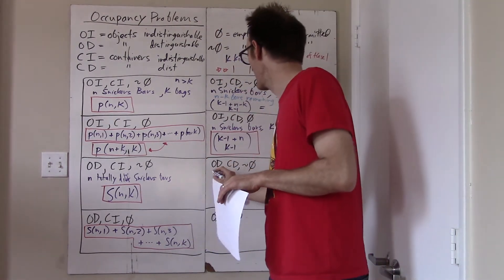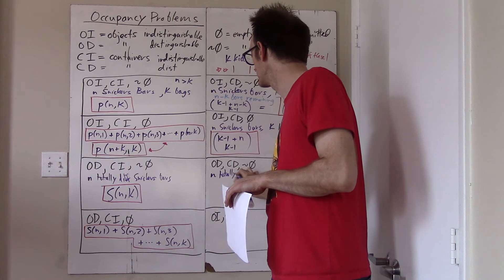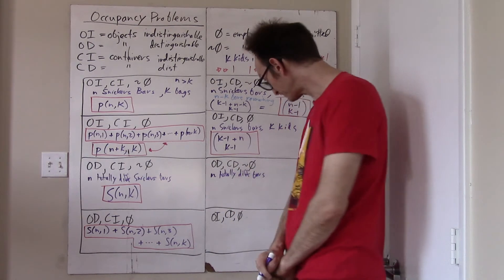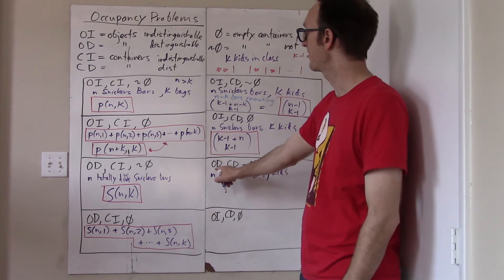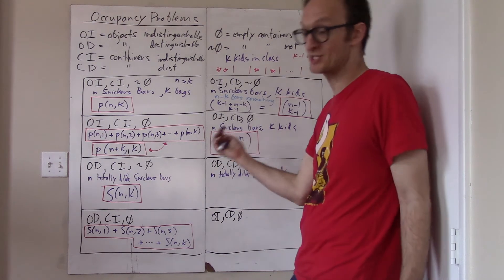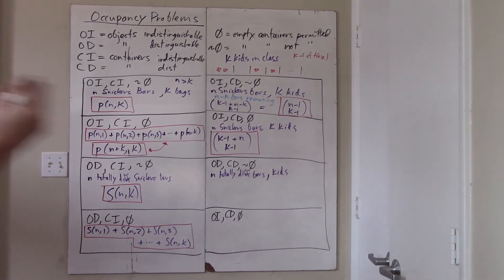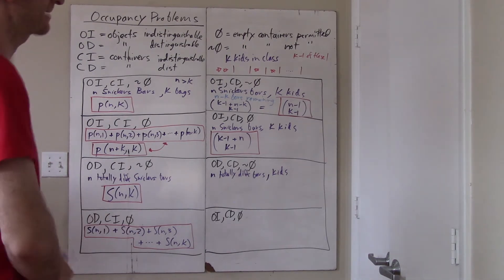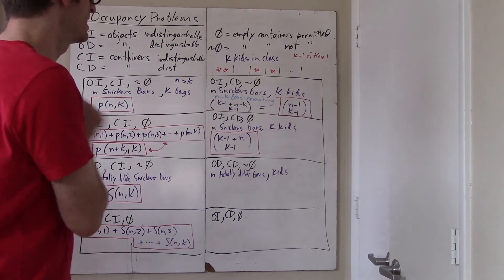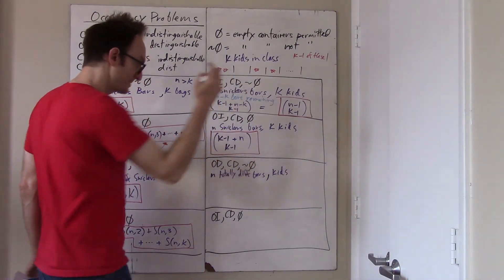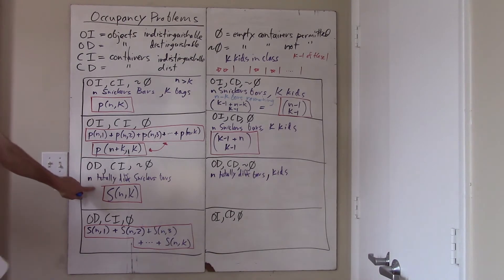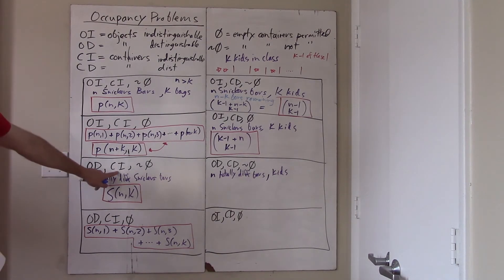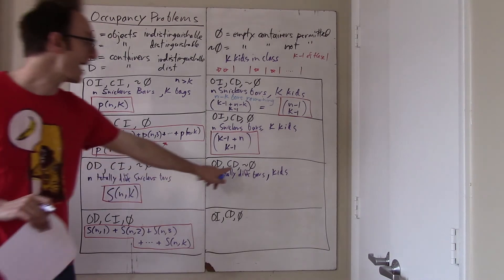Now the objects are distinguishable — you have N totally different candy bars — and we still have K kids. The objects are totally different, but the containers are distinguishable, meaning the kids are distinguishable from each other. So it matters which kid gets which bar, which bars go in which bag. Maybe the bags have the kids' names on them already, so you know as you're placing a bar into a bag which kid you're giving it to. The containers are distinguishable, but no bag can be empty.